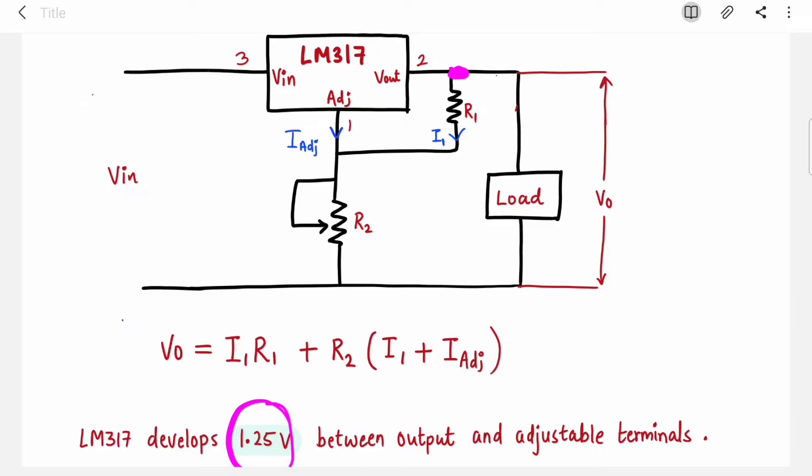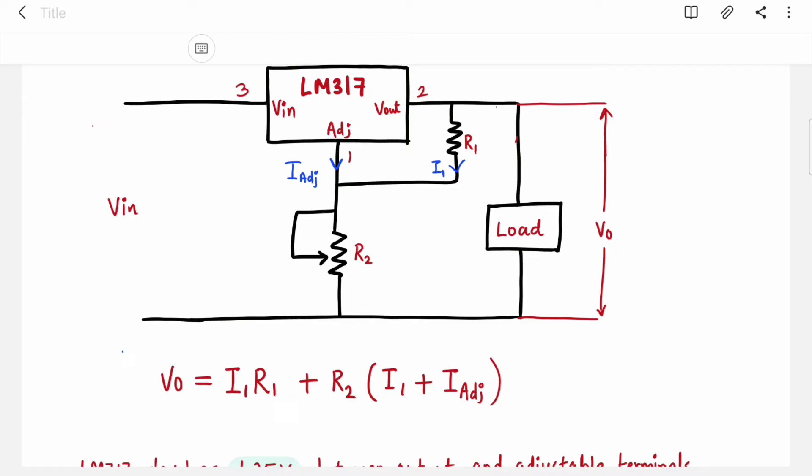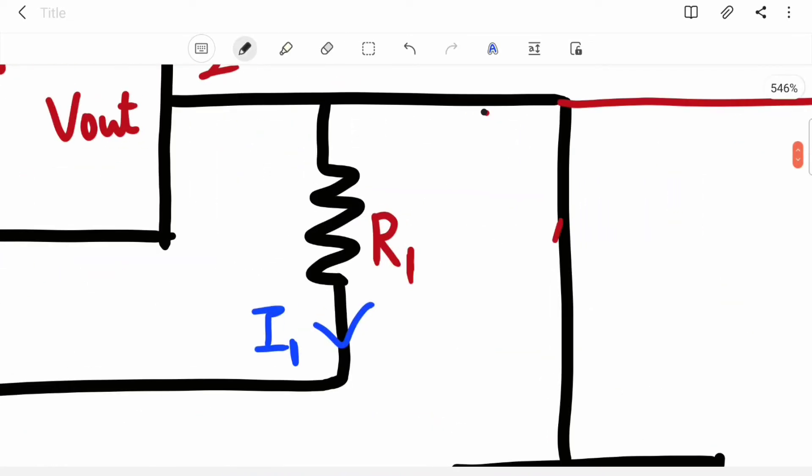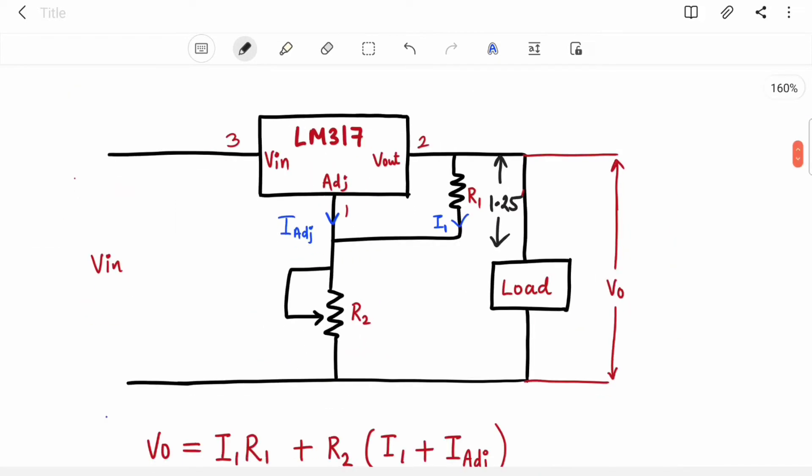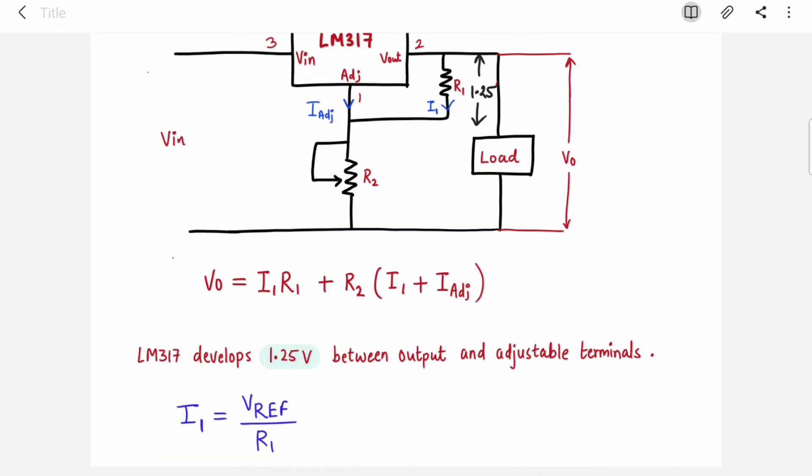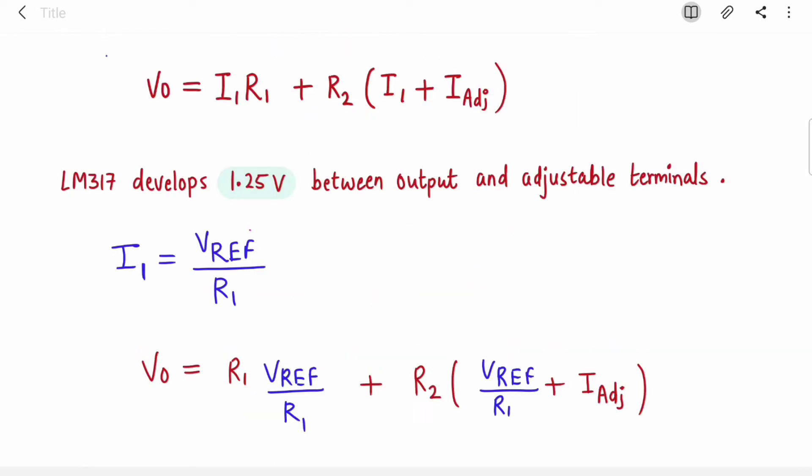The value of I1 current flowing through R1 resistor will be V_ref/R1, where V_ref is 1.25 volts. Let's substitute this value of I1 in the equation of Vo.